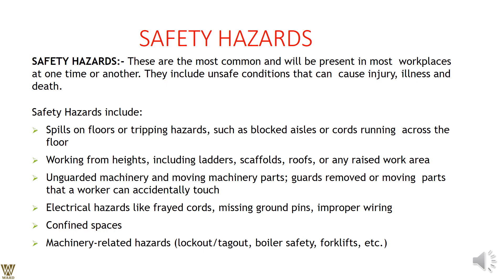Safety hazard examples include: floors that may be wet or congested with cords or tools lying around, which is detrimental to workers. Working at height carries a high chance of falling. Unguarded or malfunctioning machinery — where guards have been pulled down — can affect workers immediately in a harmful way. Electrical hazards can cause shocks, injuries, and even death due to improper grounding, wrong wiring, or exposed wires.